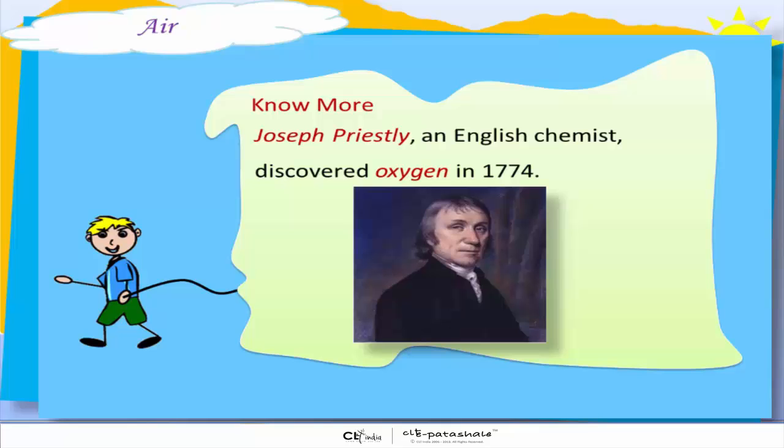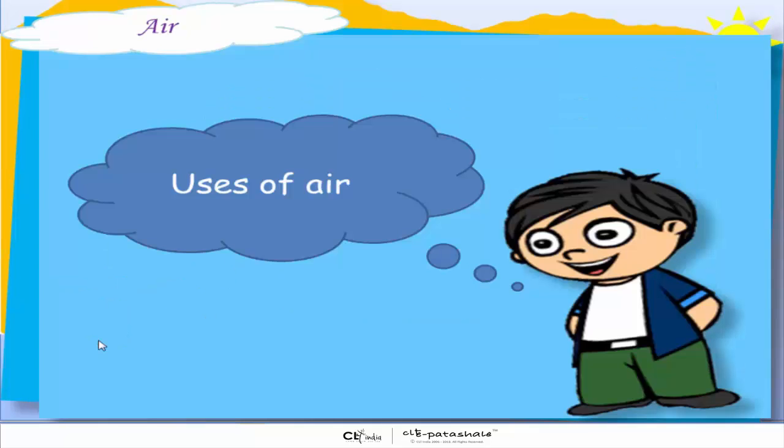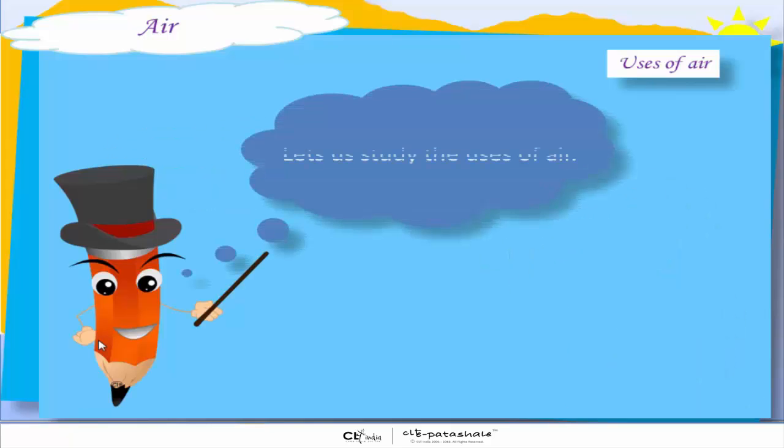Let's talk about oxygen and who discovered it. It was an English chemist, Joseph Priestley, who discovered oxygen in 1774. We all know that air is useful. So, let's learn in detail how we use air. Let's study the usage of air.